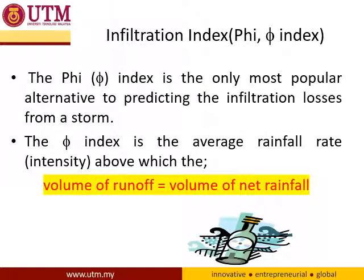The next method for estimating infiltration is using the phi index. It is quite similar but a little different. The phi index is the most popular alternative for predicting infiltration losses from a storm. The phi index is the average rainfall rate above which the volume of runoff equals the volume of net rainfall.